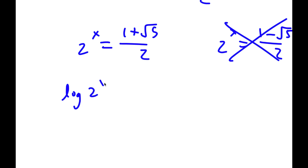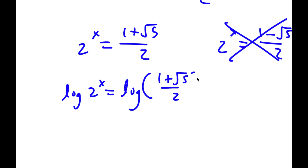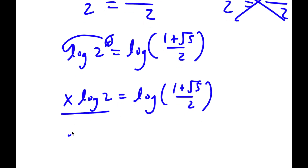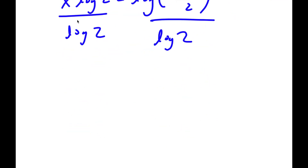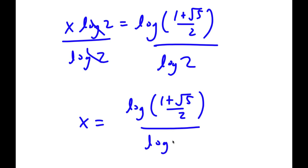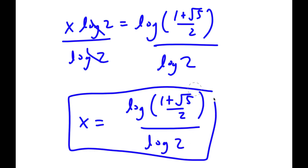So all I'm left with is 2 to the power of x equals 1 plus the square root of 5 over 2. To solve this, I take the log on both sides, move x to the front, giving x times log 2 equals log of 1 plus the square root of 5 over 2. Dividing both sides by log 2, I get x equals log of 1 plus the square root of 5 over 2, all over log 2. This is my answer.